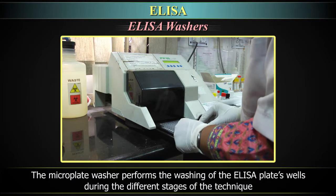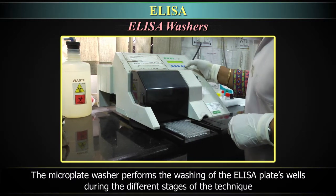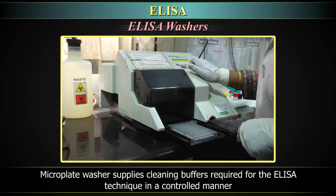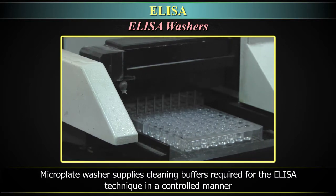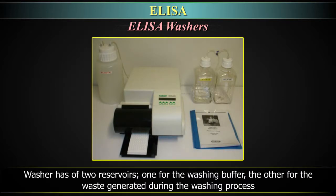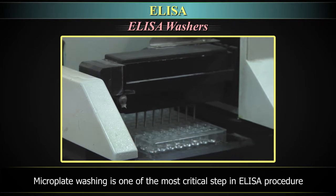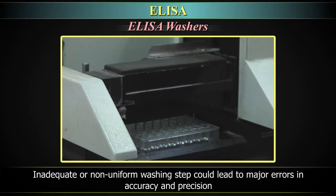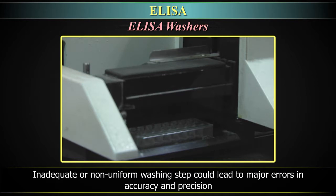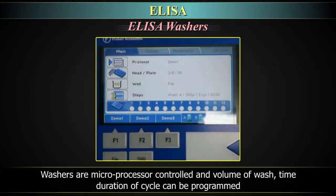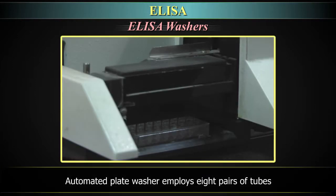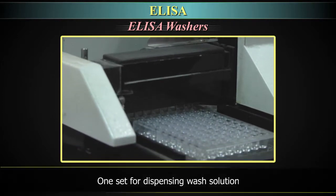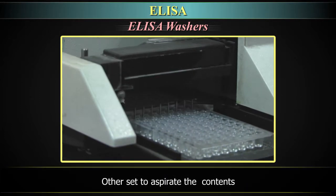The microplate washer performs the washing of the ELISA plate wells during the different stages of the technique. It supplies cleaning buffers required for the ELISA technique in a controlled manner. The washer has two reservoirs: one for the washing buffer, the other for the waste generated during the washing process. Microplate washing is one of the most critical steps in the ELISA procedure. Inadequate or non-uniform washing could lead to major errors in accuracy and precision. The washers are microprocessor controlled and volume of wash and time duration of cycle can be programmed. Automated plate washer employs eight pairs of tubes: one set for dispensing wash solution, the other set to aspirate the contents.